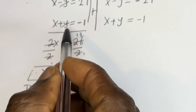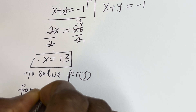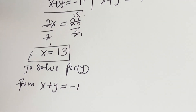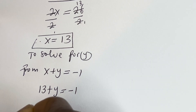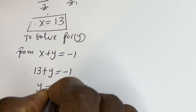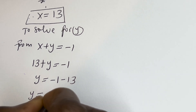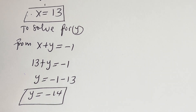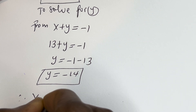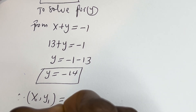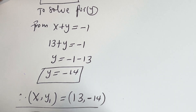To solve for y, using s plus y equals minus 1: substituting s equals 13 gives 13 plus y equals minus 1, so y equals minus 1 minus 13, which is minus 14. Therefore the first solution is (s₁, y₁) equals (13, minus 14).